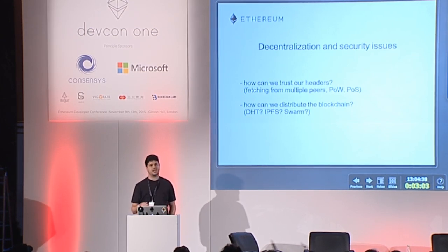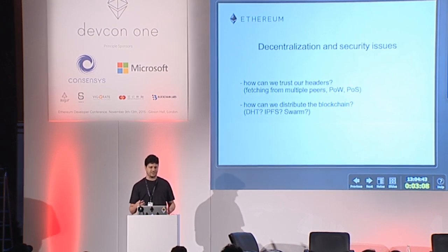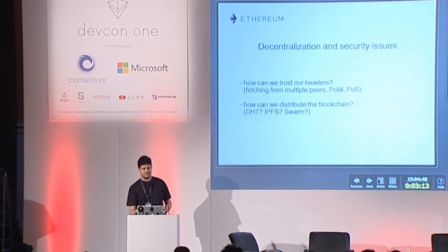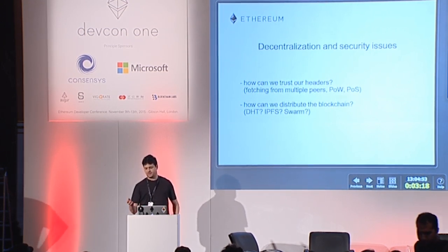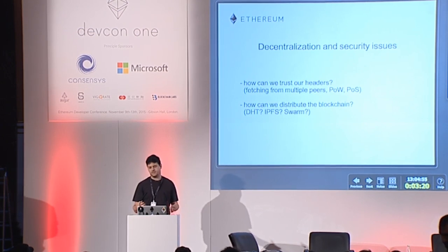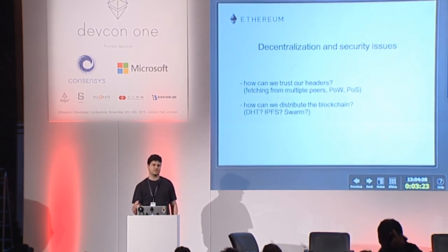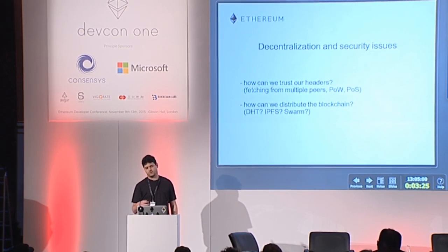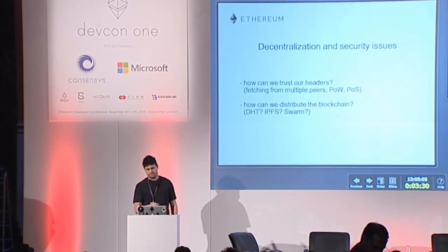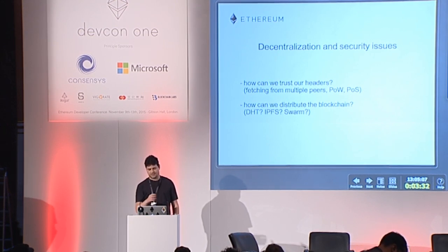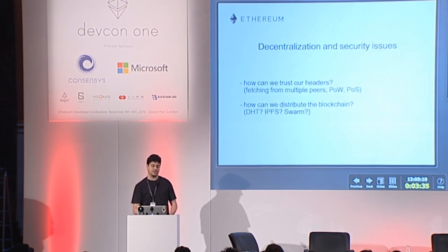If we are talking about centralization problems in the context of a light client, we have to address two important questions. One of them is the concern of security: how can we trust our headers? The light clients work in a way that the Patricia tree structure ensures that if we download any block or state data, we can check its validity by checking it against the root hashes found in the block headers. So if we have correct headers, we have secure access to the network.